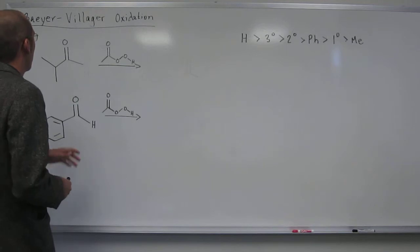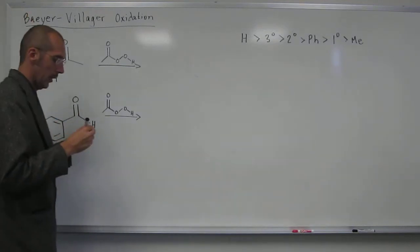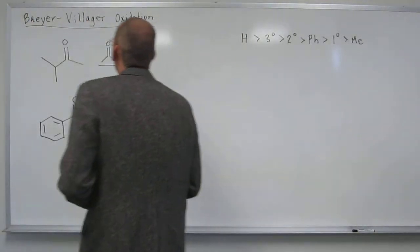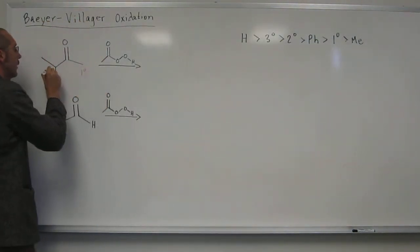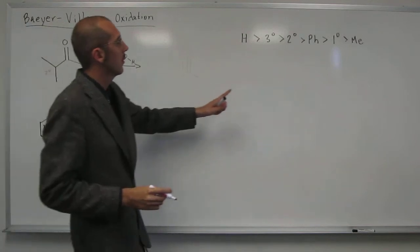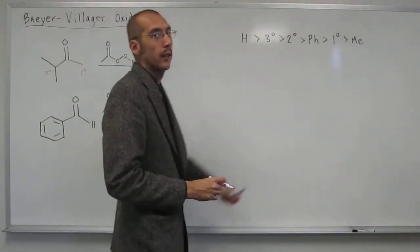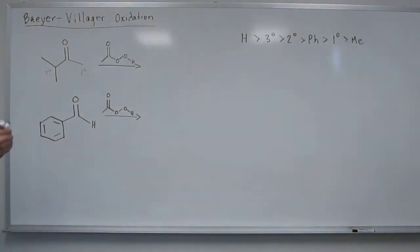So in this case, we're distinguishing between a primary and a secondary. So if we go over here and we look, secondary's got the greater migratory aptitude.